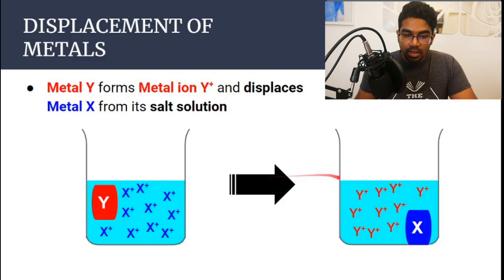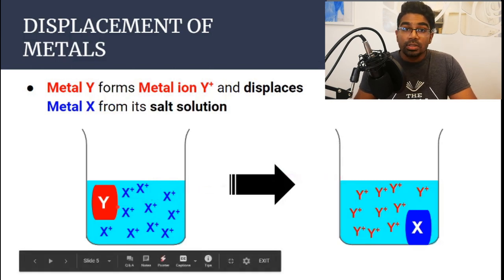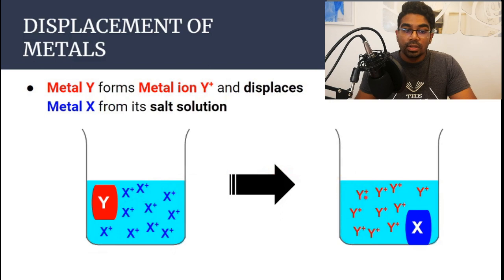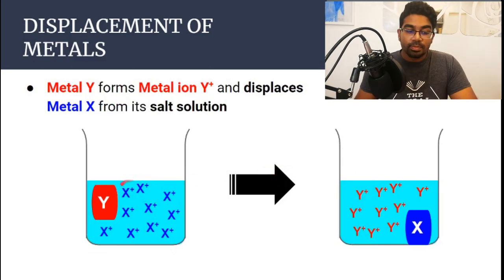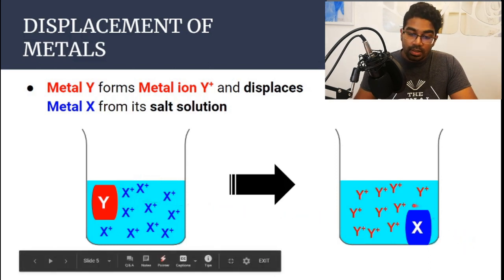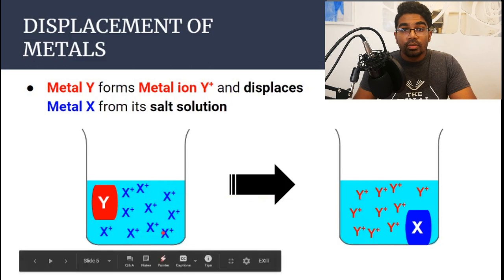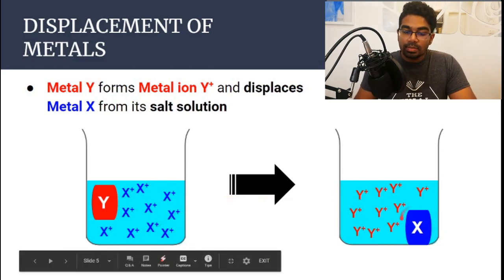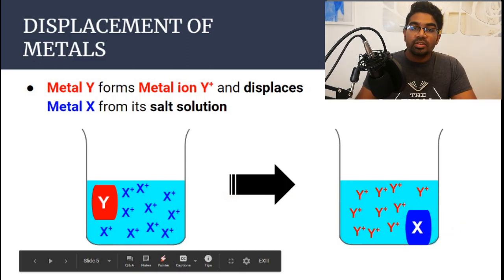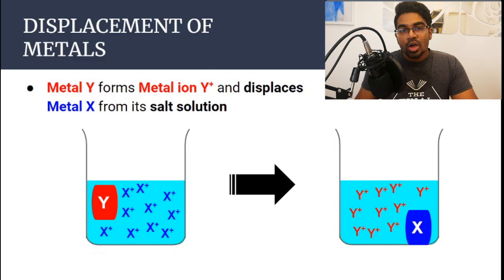Metal Y will form Y+ ions, then it will displace X+, and X+ will become the solid metal. So from the ionic form in an aqueous salt solution, X+ has been displaced out to become the metal in solid form. This is generally what displacement of metals means.